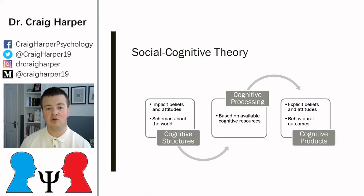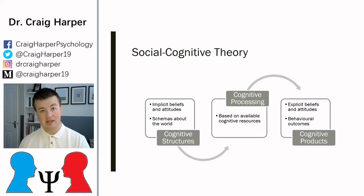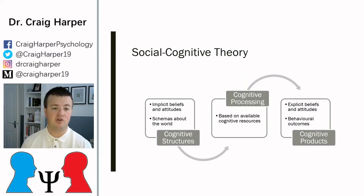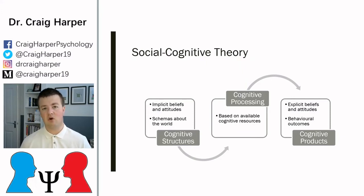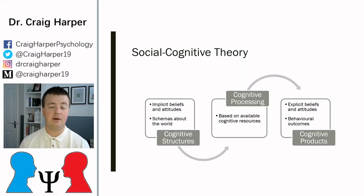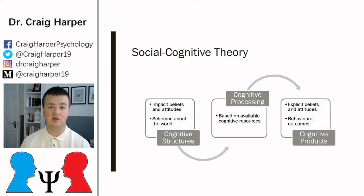Cognitive processing is fed information from the cognitive structures. A really key idea behind cognitive processing is the availability of cognitive resource — the concept of cognitive load. If we have lots of things going on, it may be more difficult to make a decision or to override some of our core beliefs.